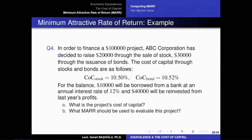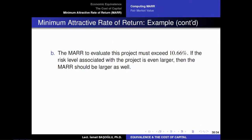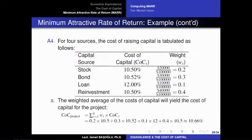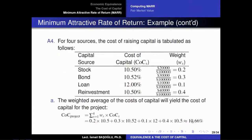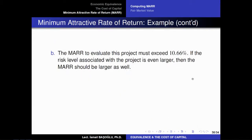The second question is: what minimum attractive rate of return should be used to evaluate this project? What we know is the MARR must never be less than the cost of capital of this project. We have already established that the MARR to evaluate any project must certainly be higher than the cost of raising that capital. If the cost of raising capital is 10.66%, then to evaluate the project or its alternative cash flow options, we need to evaluate under a 10.66% interest rate. So the MARR should be larger than 10.66%.